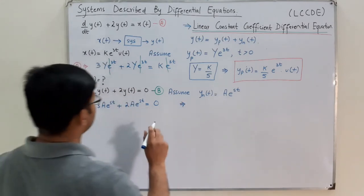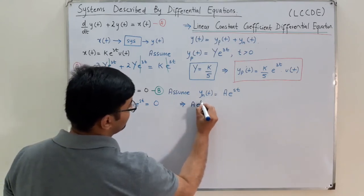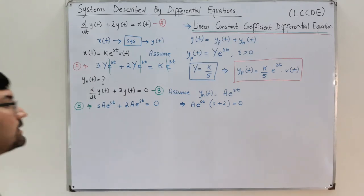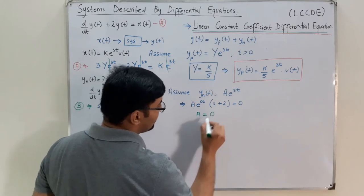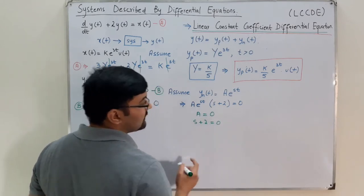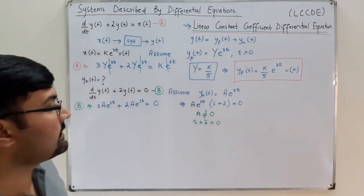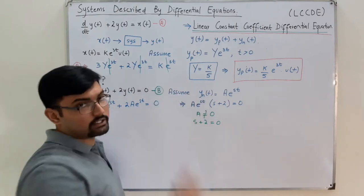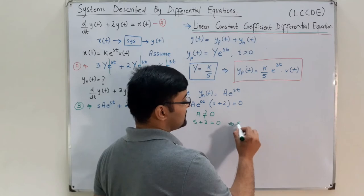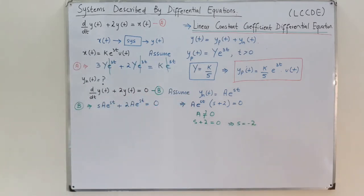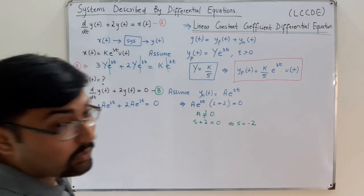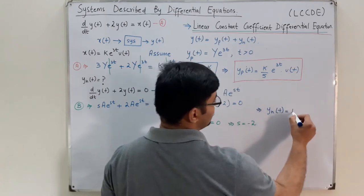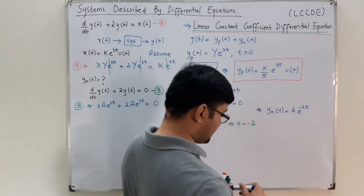Taking A·e^(st) as common, we get A·e^(st)·(s + 2) = 0. Either A = 0 or s + 2 = 0. A cannot be 0 because then the output would be 0 and we'd have no condition to continue. So s + 2 = 0, giving s = -2. This implies my homogeneous solution is y_h(t) = A·e^(-2t).